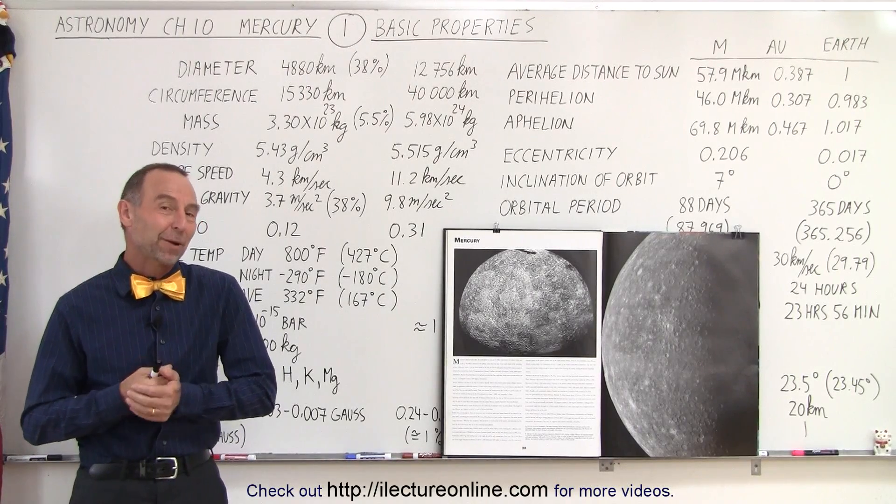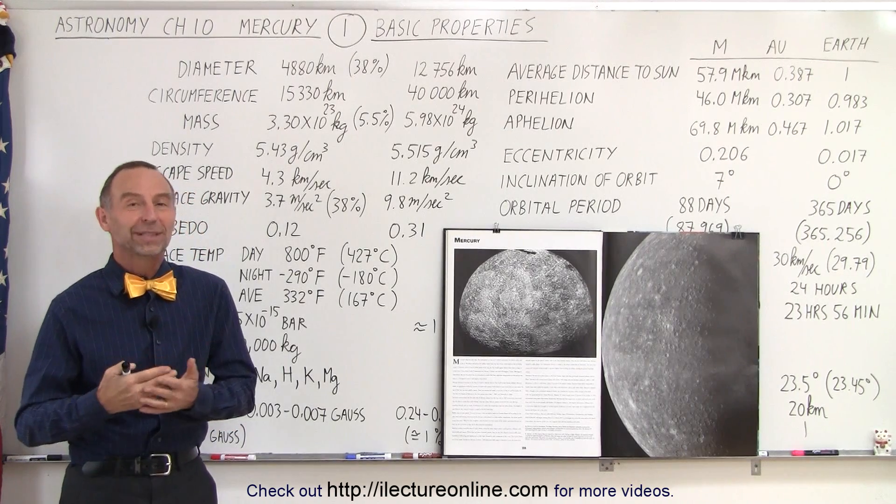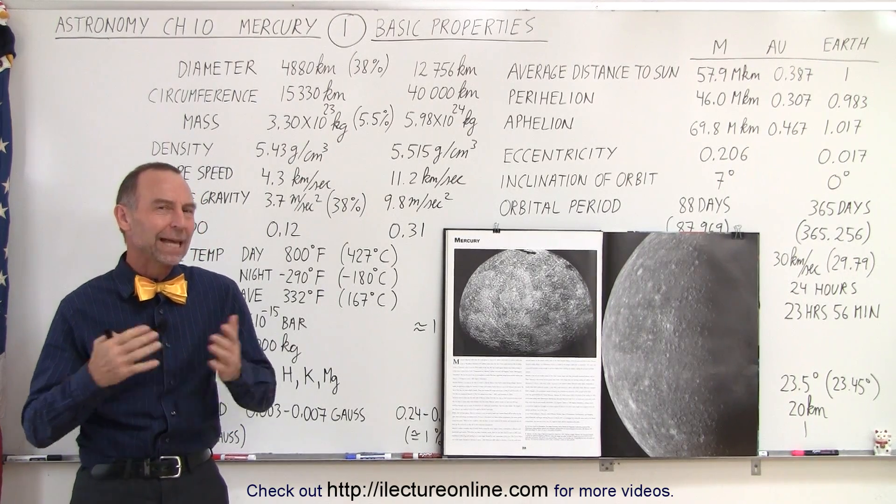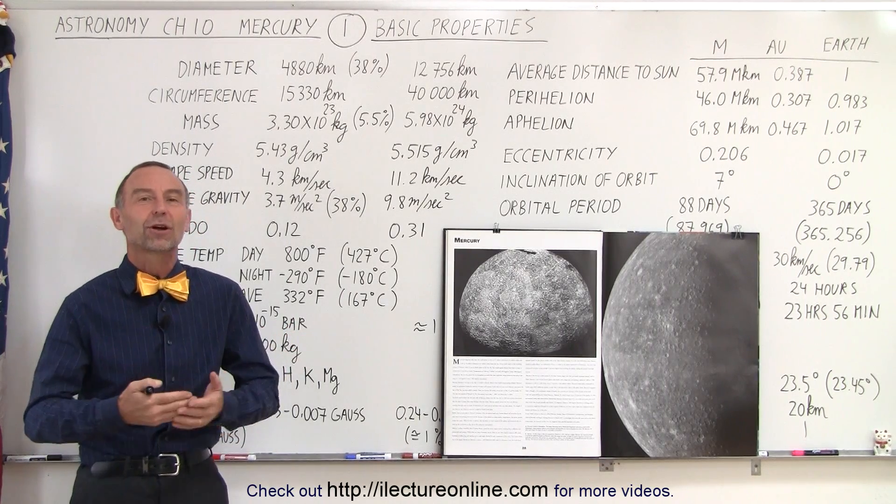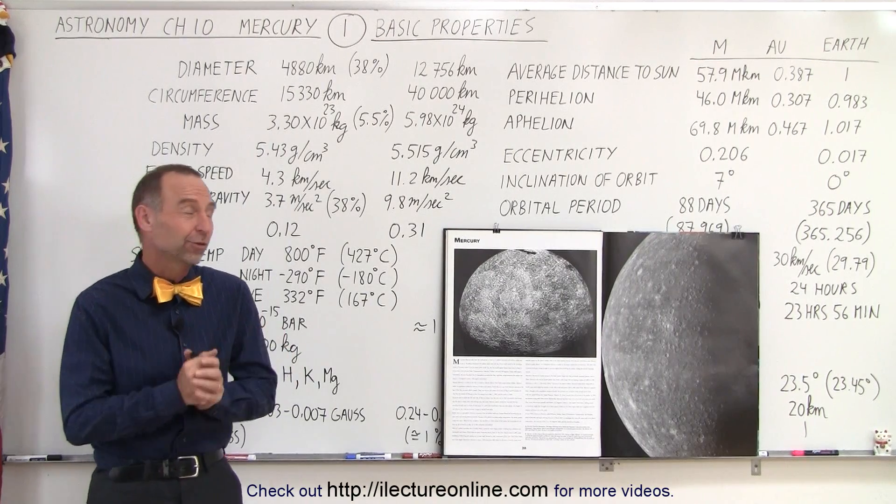Welcome to White Lecture Online. By request of a certain number of viewers, we're going to continue, at least for a while, with astronomy. We haven't really covered the planets yet, not in the kind of detail we would like to. So here we're going to start with Mercury, the first planet in our solar system, the one closest to the sun.